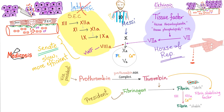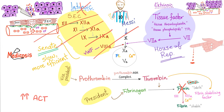If I have a problem in the intrinsic pathway, I will have problems making fibrin and therefore a prolongation or delay in the time it takes to coagulate, which leads to a prolonged activated clotting time. If I'm taking heparin, heparin activates antithrombin 3. Antithrombin 3 will inhibit factors 9, 10, 11, and 12 — and sometimes factors 2 and 7. So everything is inhibited. That's why ACT will be prolonged, and that's the purpose of the test.